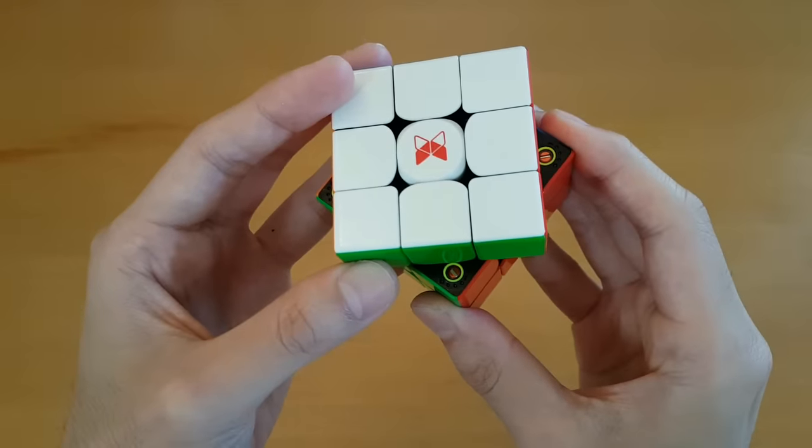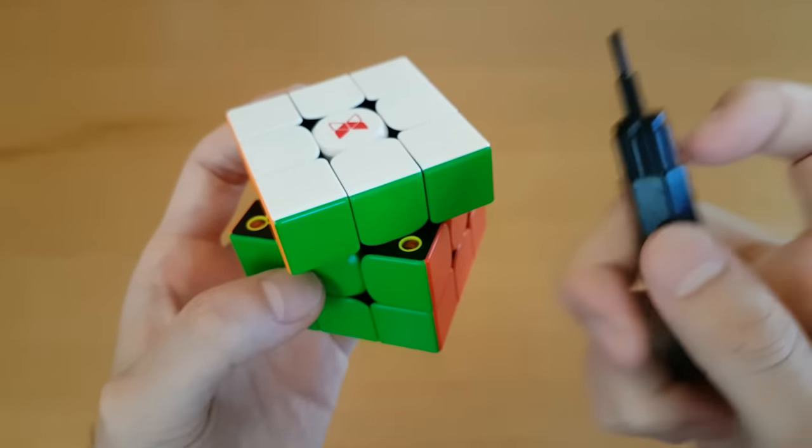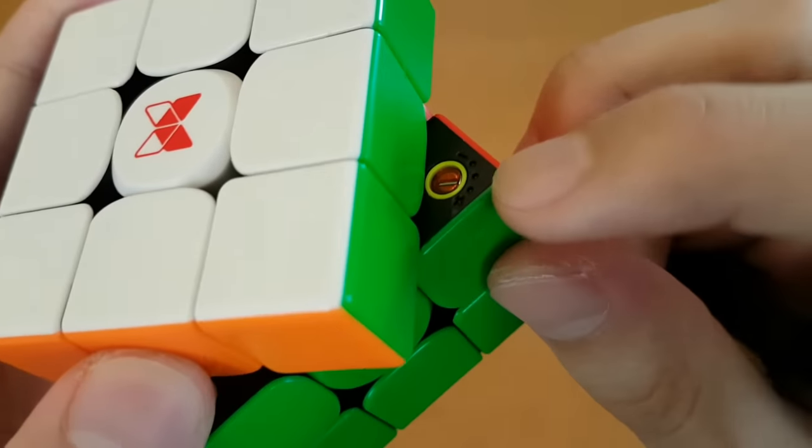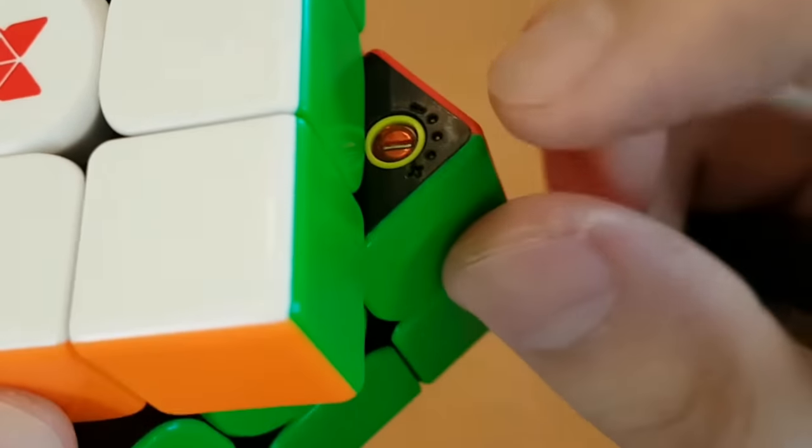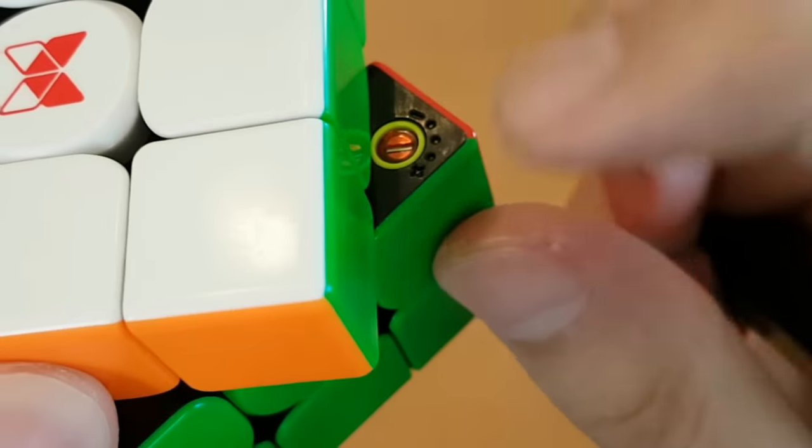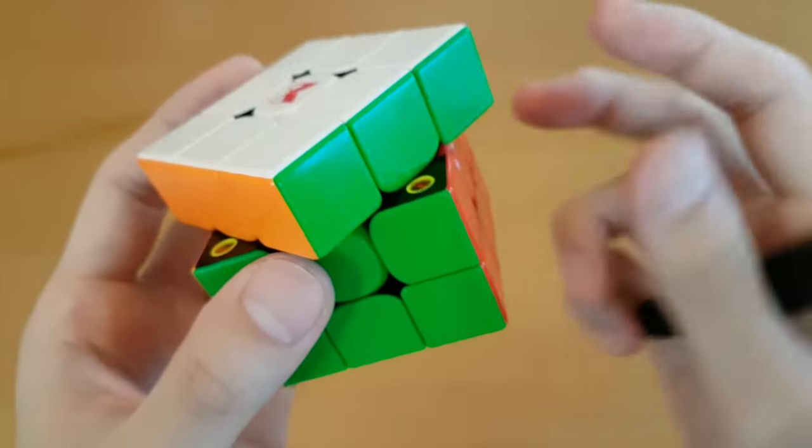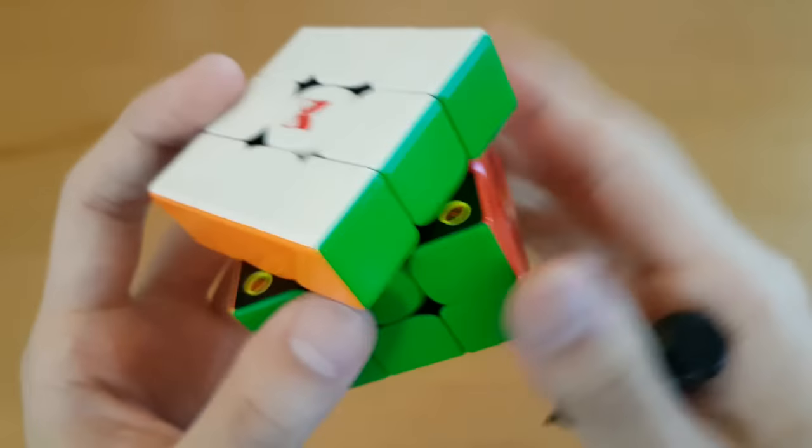And then there are also the magnet settings. You'll have to set your screwdriver to the flathead and then you can just put it here and turn. On each side, there are five magnet strengths from the minus sign to the plus sign, meaning less to more magnet strength. And remember, stronger magnets is not always better because it can slow down your cube with the extra force you would have to put on it.